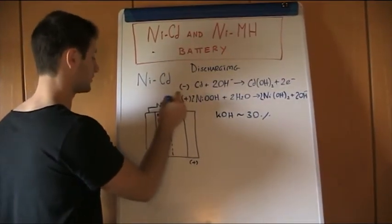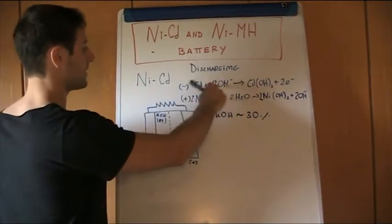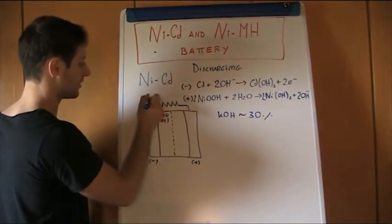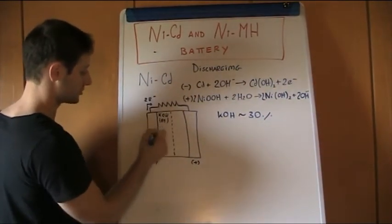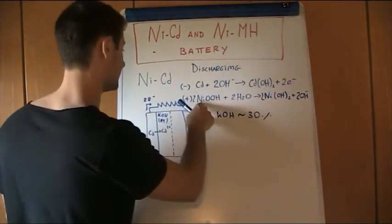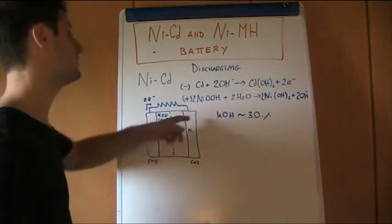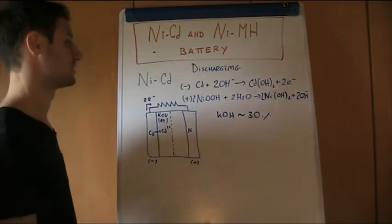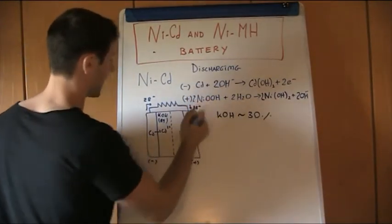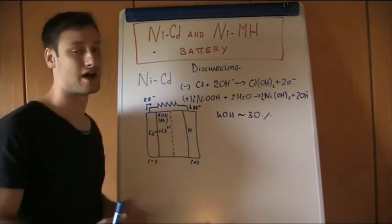We have our circuit, and what is happening is that the cadmium is passed from cadmium zero to cadmium 2+, and electrons are released in this direction, and the nickel oxide hydroxide is reduced in nickel hydroxide due to the electrons that are passing from the external circuit, so nothing different with a common battery.